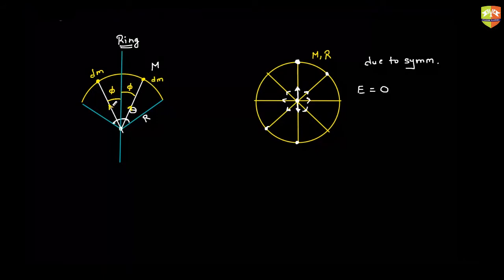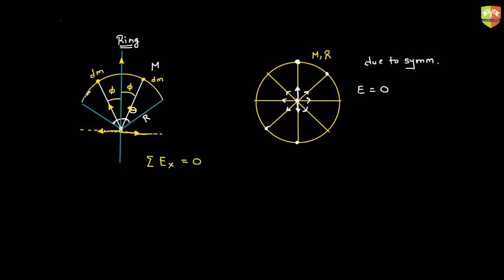The horizontal components of these two fields cancel out — only the vertical component remains. Integration is a scalar addition; you can't have a vector addition when you integrate. That is why you can integrate only components along the vertical and horizontal directions. The horizontal component of the field cancels for every pair, so you will have only a net field along the y-direction.